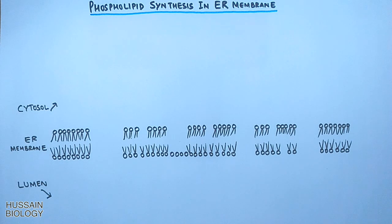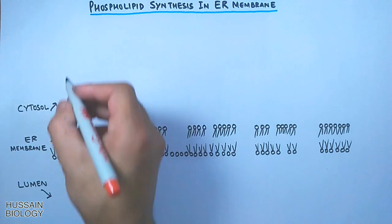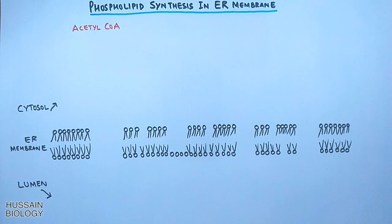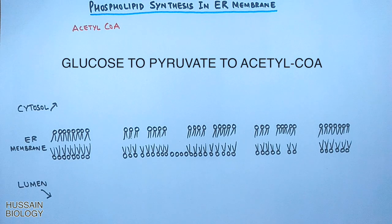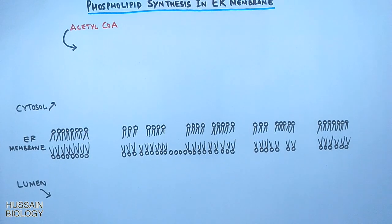To drive the synthesis we need some precursors, and in this case we have the acetyl CoA molecules. In the cytosol, acetyl CoA comes from carbohydrate metabolism, which starts from glucose to pyruvate, and then pyruvate to acetyl CoA by the PDH enzyme.